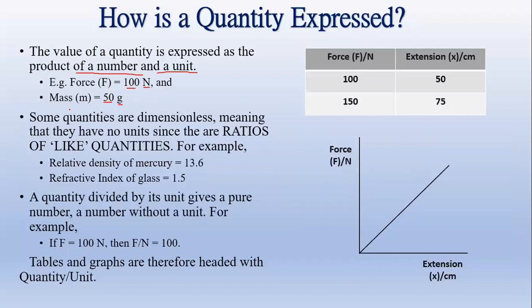However, not all quantities have a unit — some quantities are dimensionless, meaning they have no units. This is because these quantities are ratios of like quantities, so the units cancel off. For example, the relative density of mercury is 13.6 — there is no unit because it has canceled off. Similarly, refractive index is 1.5, with no units.